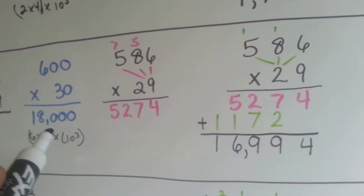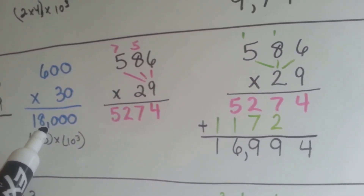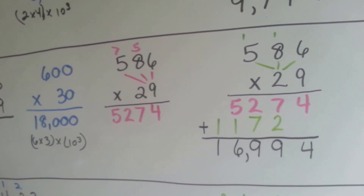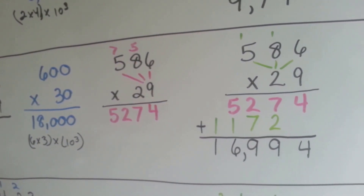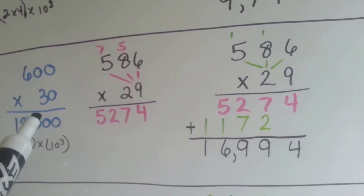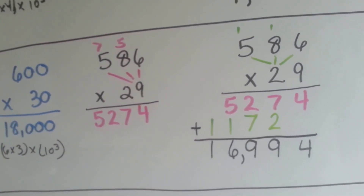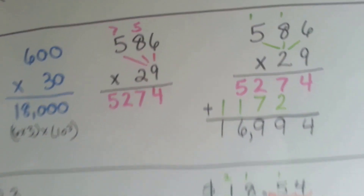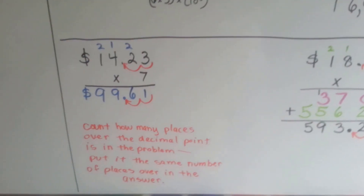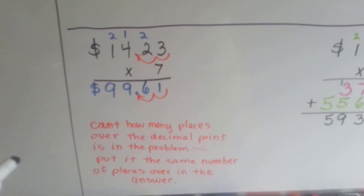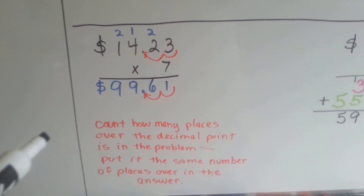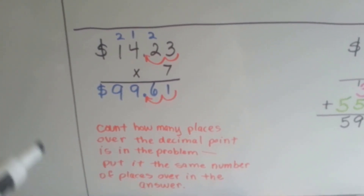Our estimate was 18,000. That wasn't that close, was it? We were about a thousand off. Now, another part of the common core is knowing how to do multiplication with decimal points to the hundredths.